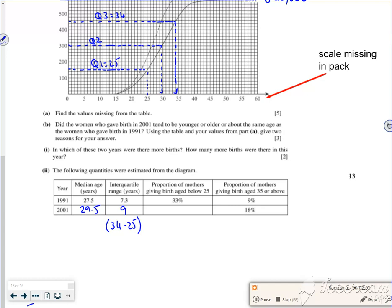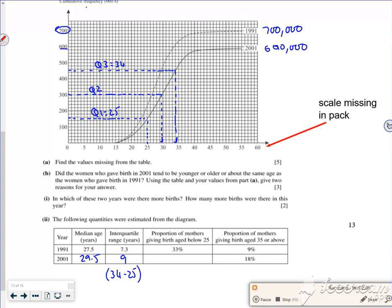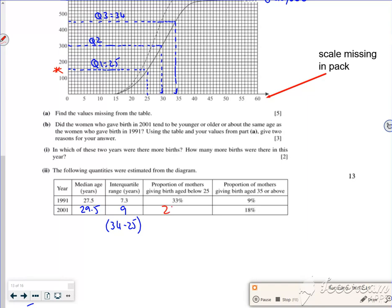So then it says proportion of mothers giving birth below the age of 25. So 25, oh look see 25 is the lower quartile. If it's a lower quartile it must be the bottom 25%. There you go, I've done that.